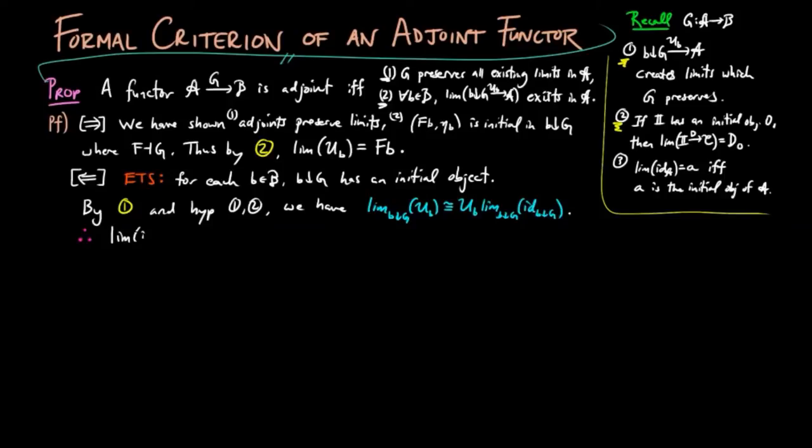Thus, the limit of the identity on B over G exists, and by 3 on the right, we see B over G has an initial object, which completes the proof.